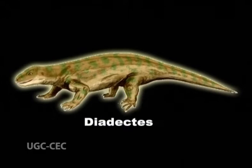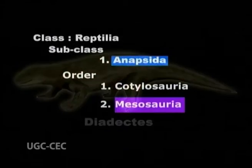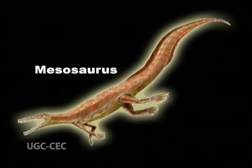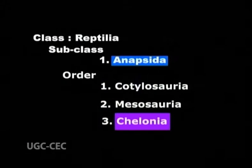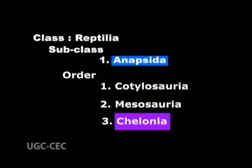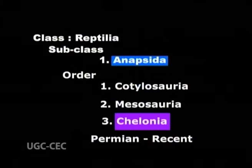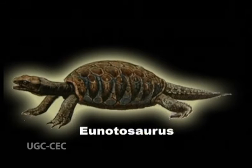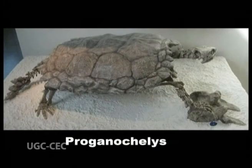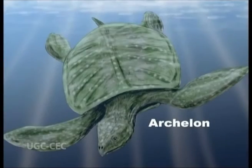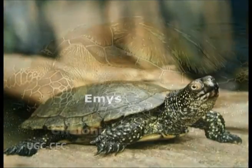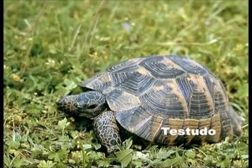Order 2, Mesosauria, lived in the late Permian. The example is Mesosaurus. Order 3, Chelonia, evolved in Permian while some exist today. Examples are Unatosaurus, Proganochelys, Archelon, Kayless, Amys, Chelonia, and Testudo.